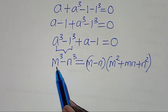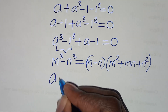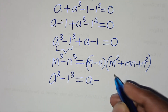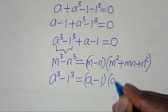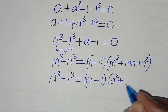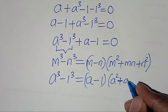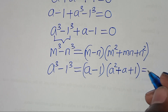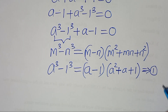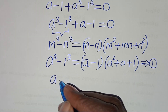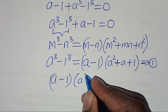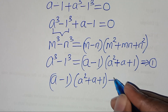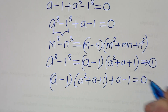So, applying this property here, a to the power 3 minus 1 to the power 3 is the same thing as a minus 1, times a squared plus a times 1, plus 1 squared, which is 1. So let's call this equation 1. Here we'll have a minus 1, times a squared plus a plus 1, plus a minus 1, this is equal to 0.